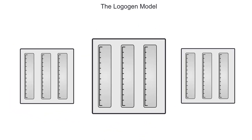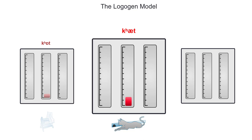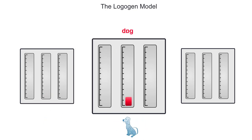Logogenes do not operate in isolation. The input 'cat', for example, would, on the basis of phonetic similarity, also activate the logogene for 'cot'. Likewise, 'dog' would activate its voiceless counterpart 'doc'. Yet 'dog' is more frequent — its threshold is lower and it fires faster.